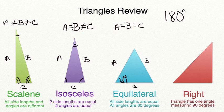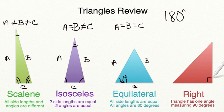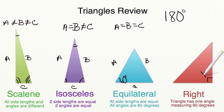A right triangle is a triangle that has one angle measuring exactly 90 degrees. You will often see that indicated by a square in the corner of the angle, and whenever you see a square written in the corner of an angle, it's showing that that angle has a measure of exactly 90 degrees.